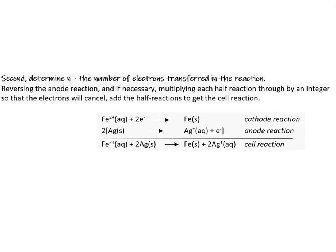Next, we determine the number of electrons transferred in the reaction. There's one electron transferred in the silver oxidation half-reaction, the anode reaction, and two electrons in the cathode half-reaction. So the value of n in this case is 2.